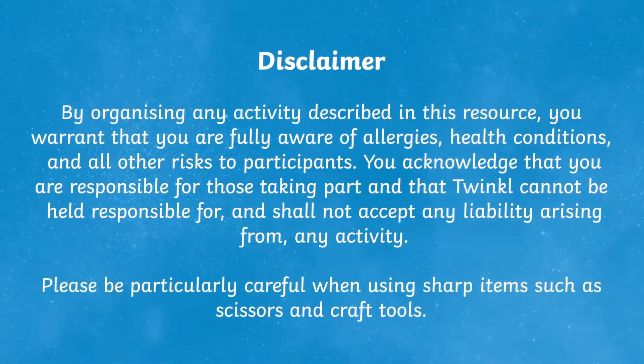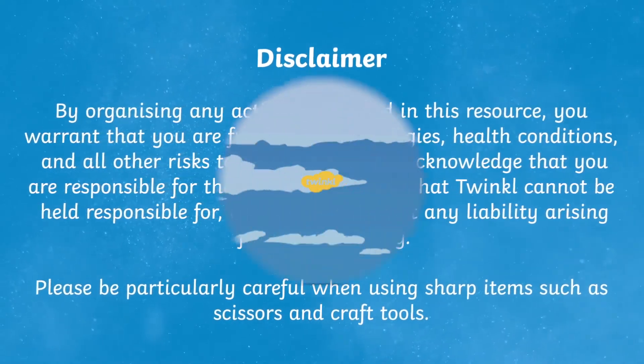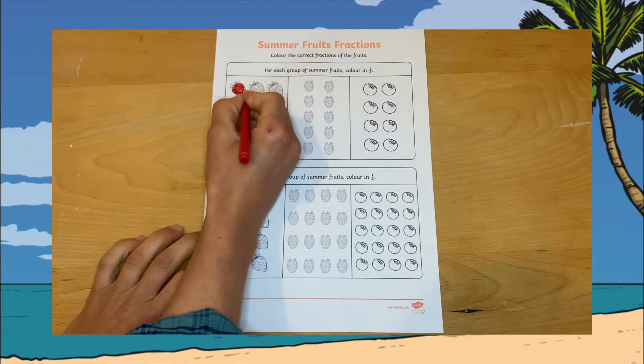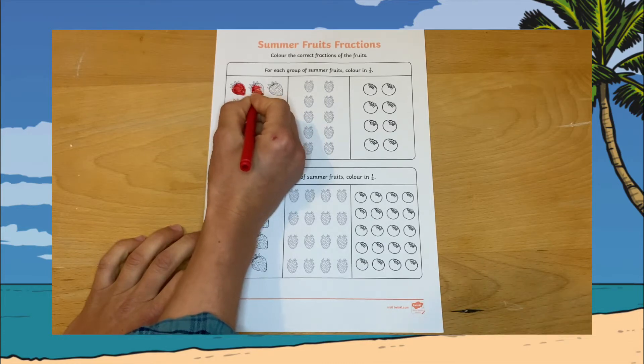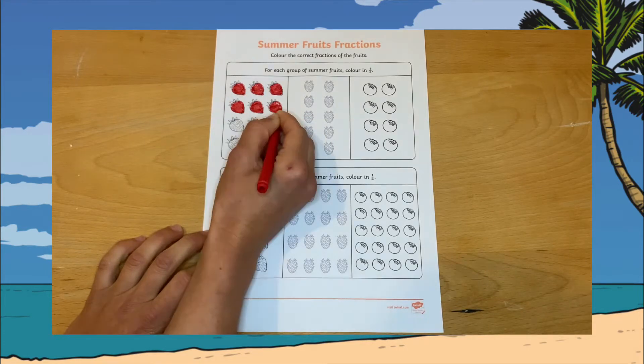Let's go and take a look. To complete the activity, your children simply have to color in either half or a quarter of the fruit set as shown on the worksheet.